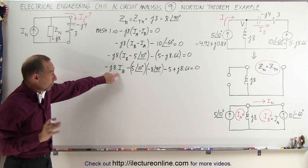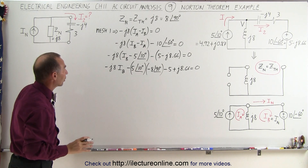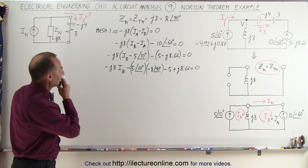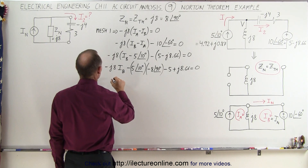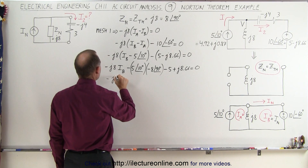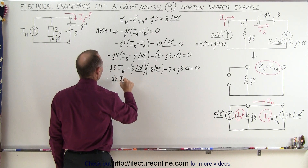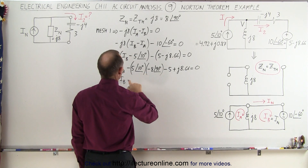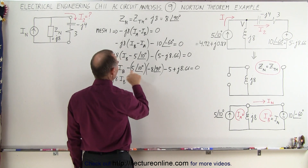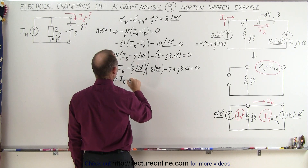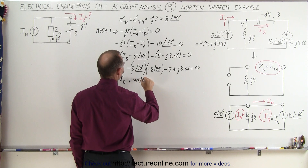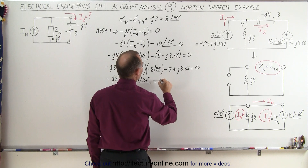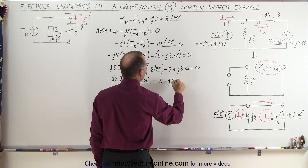So I sub B is what we're solving for — that will be the Norton current. Multiplying this out gives minus J8 times I sub B equal to this. The next step: 40 with a phase angle of 100 degrees, and moving terms over, this equals positive 5 minus J8.66.